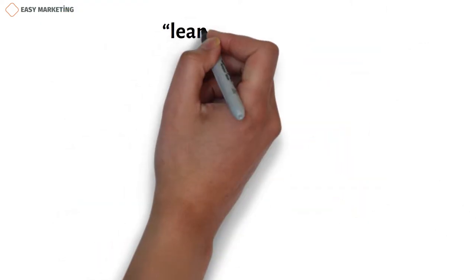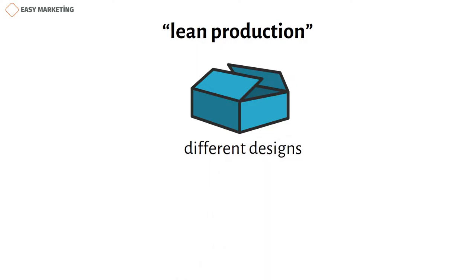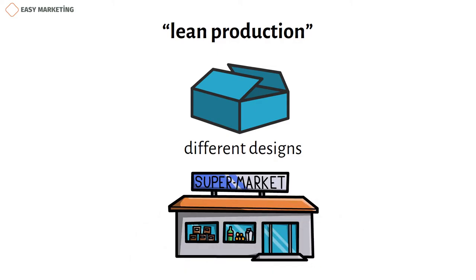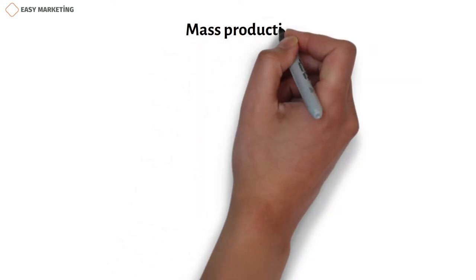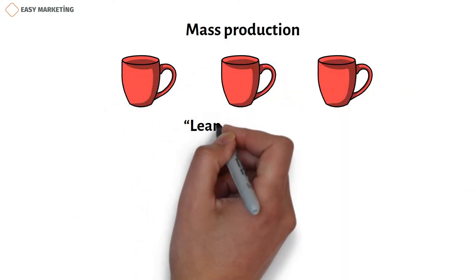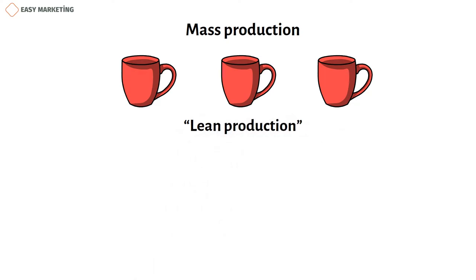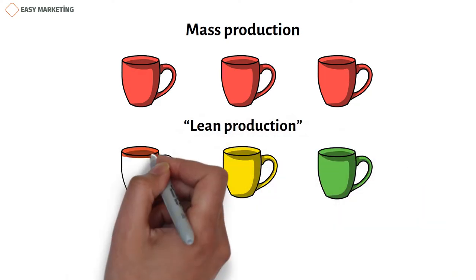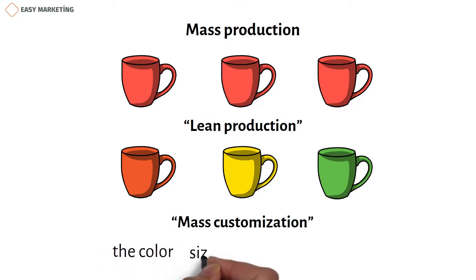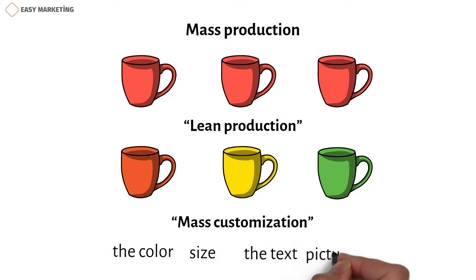In the lean production system, which began to be used later, one product is mass-produced in different designs, and the wishes of various market segments were met. To summarize: consider a firm that manufactures cups. In mass production, exactly the same cup is produced in bulk. In lean production, several different colors and sizes of the cup are mass-produced to meet the demands of different segments. In the mass customization system, the buyer chooses the color he wants, adds the text or picture he wants, and orders the cup. The company then prepares this ordered cup and delivers it to the buyer.